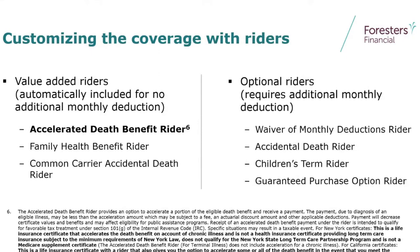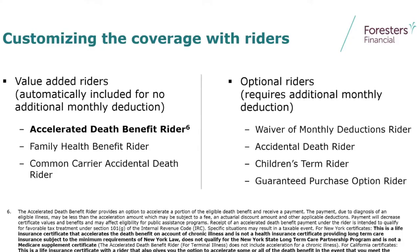Riders — let's talk about just a couple. The Accelerated Death Benefit Rider is available — that's our living benefits. We'll go a little deeper in just a second. We also have a children's term rider that's used a lot. If you're insuring the whole family, what a great opportunity to add the children's term rider. Or on another podcast we'll talk about our juvenile whole life as well. If we're covering the parents and adding the children's term rider, it's very inexpensive.